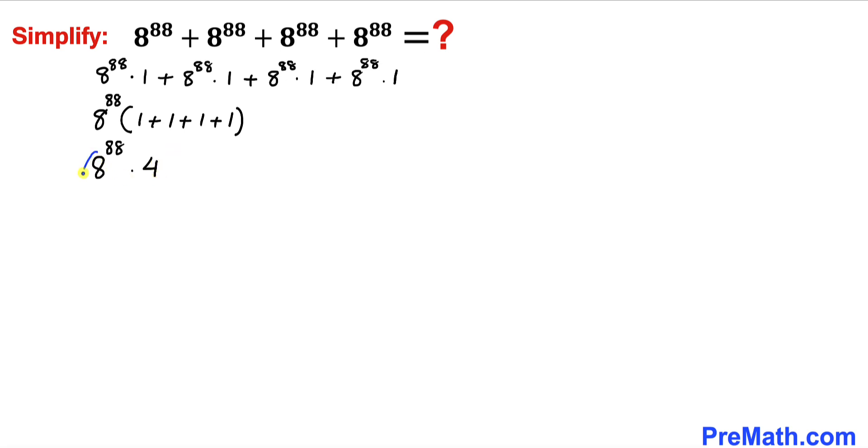Now we can see that this base 8 could be written as 2^3 and likewise this 4 could be written as 2^2. So therefore we can write this as (2^3)^88 times 2^2.